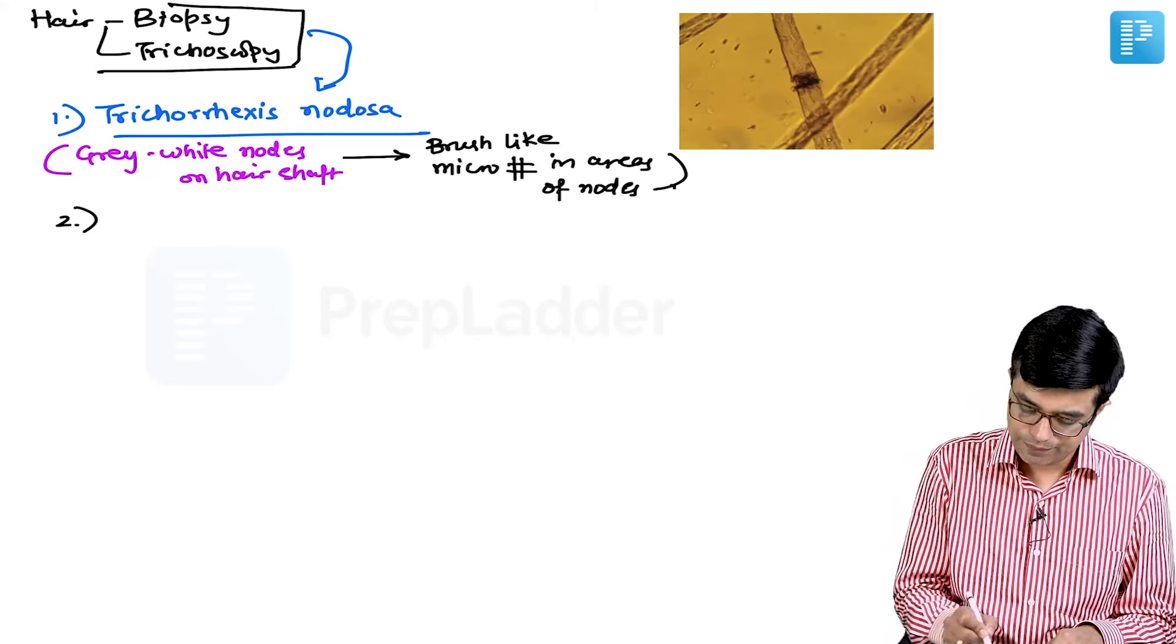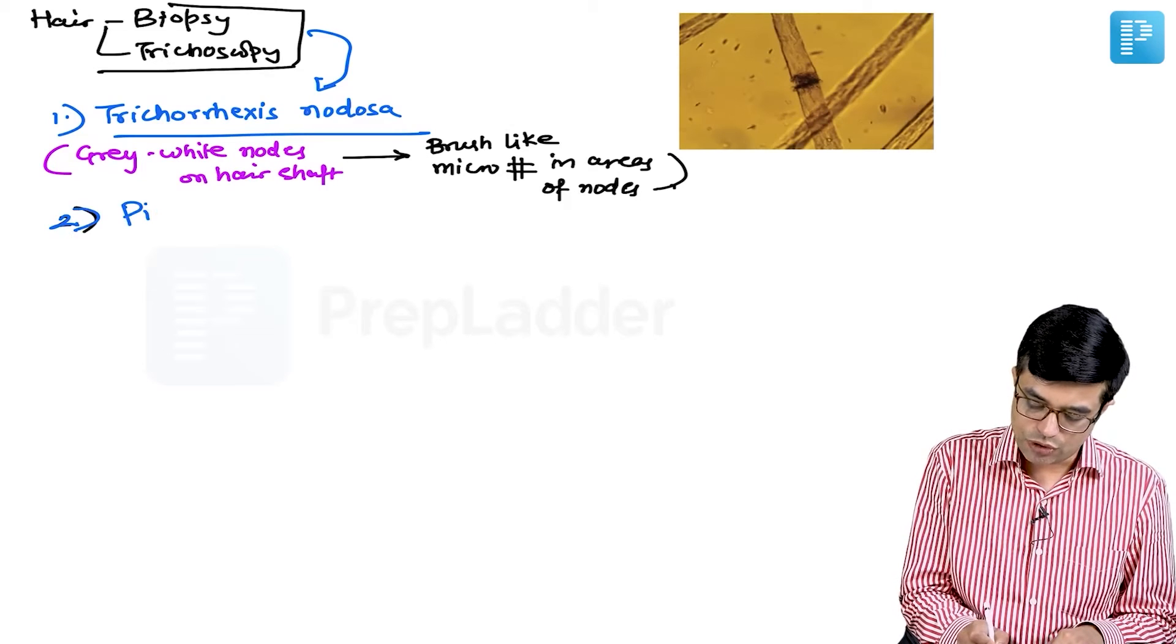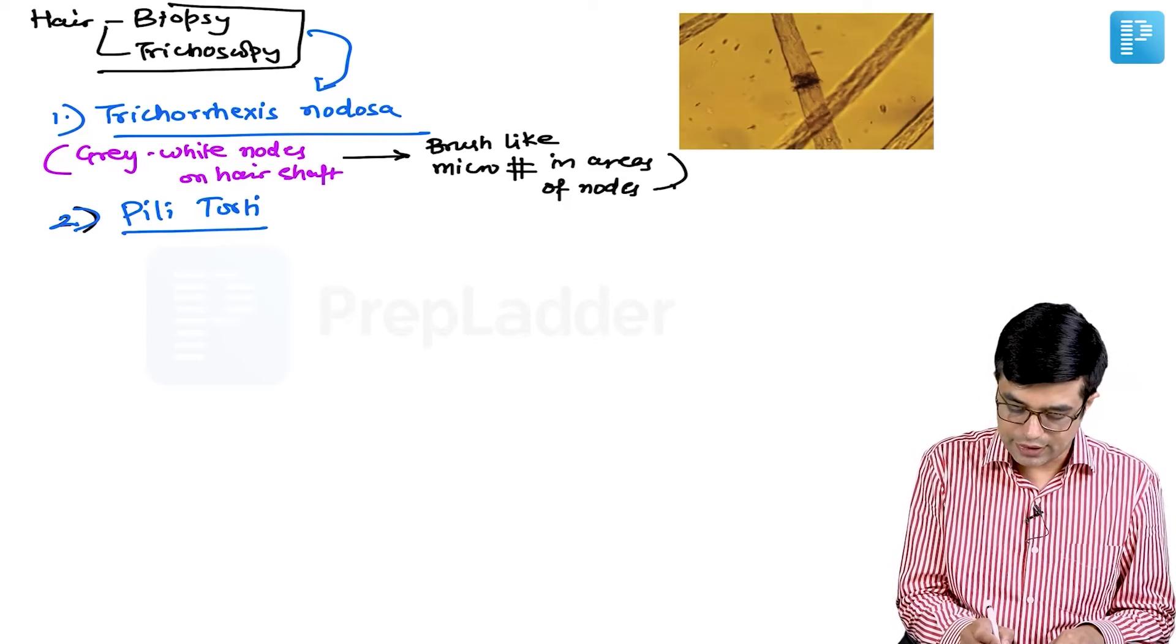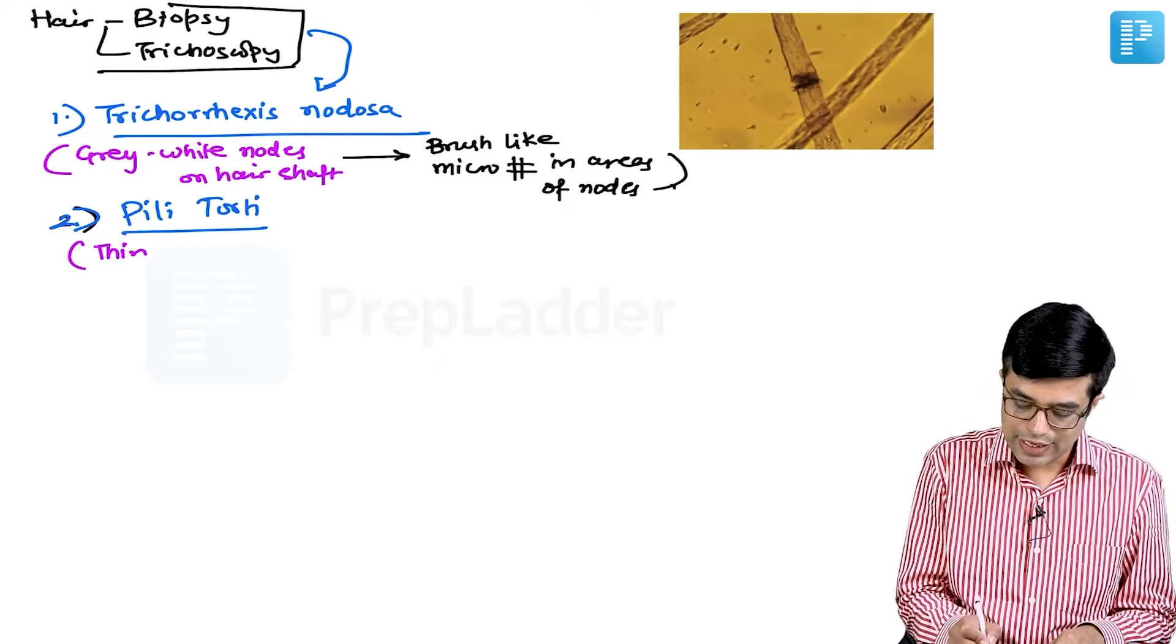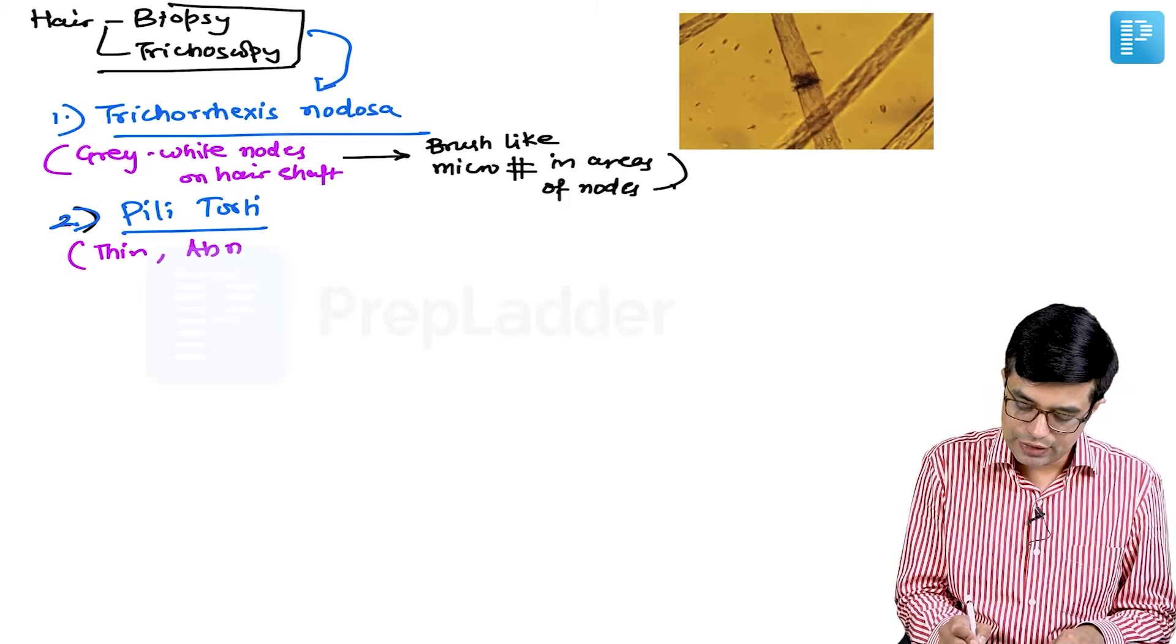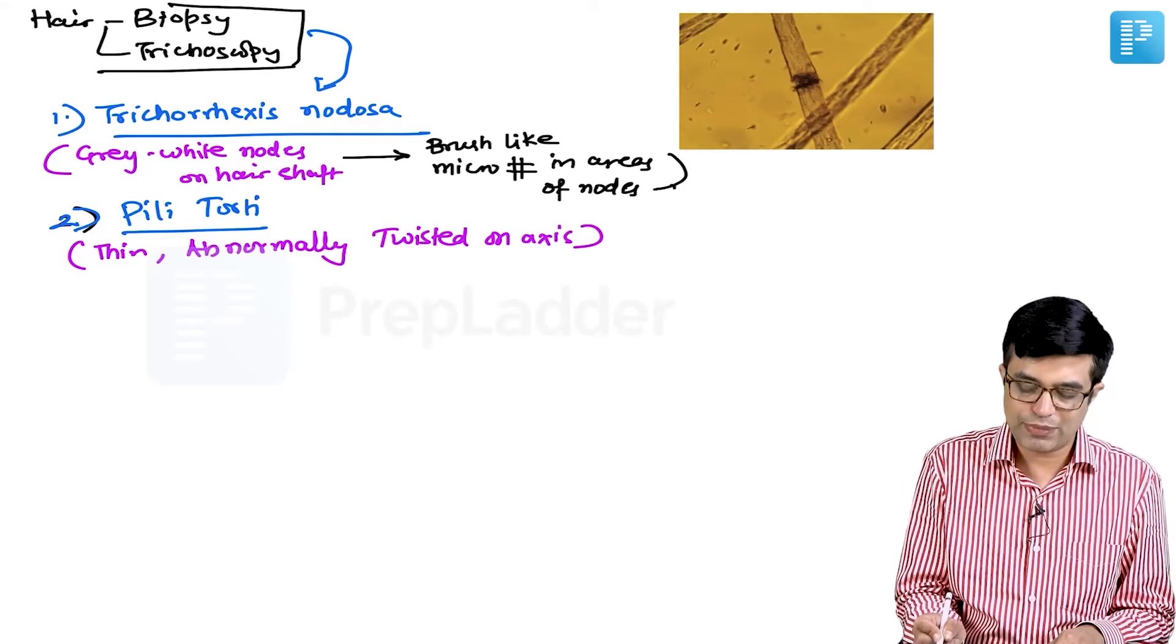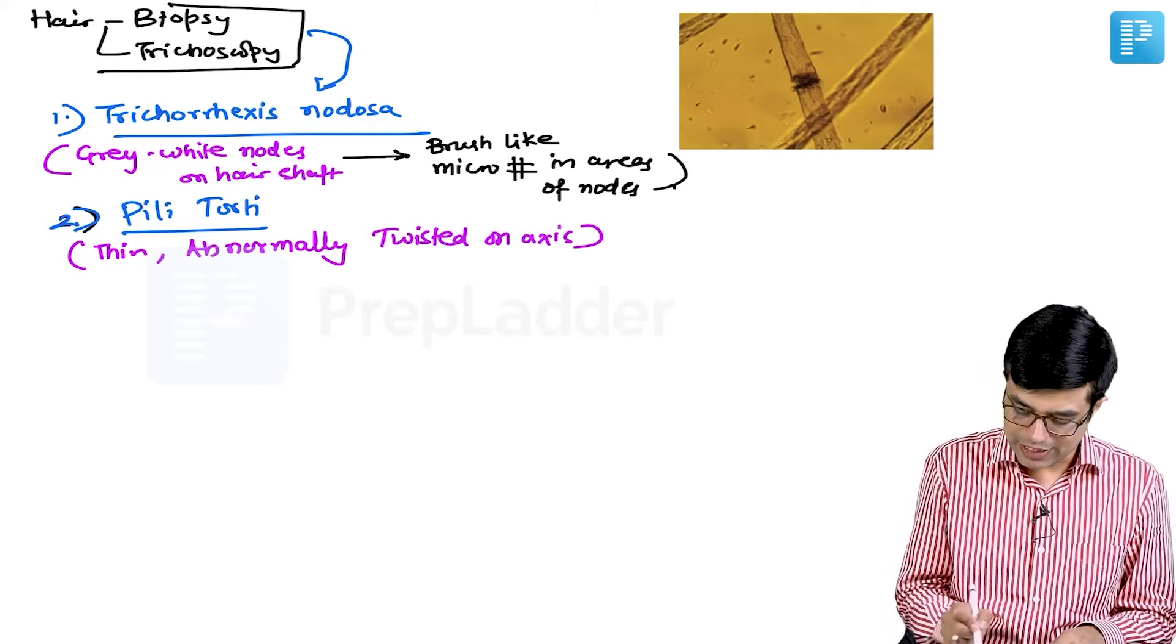The second pattern is pili torti. The name itself is saying the hair are thin and they are abnormally twisted upon their axis. That is called pili torti.